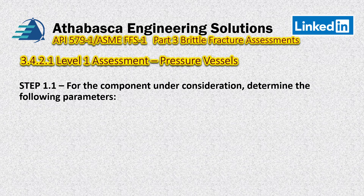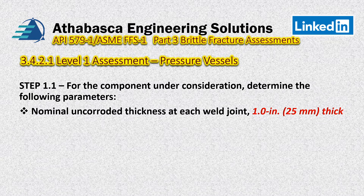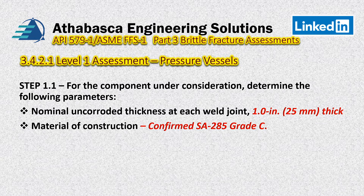As per the procedure, in Step 1 we look up required values. First, we find the nominal uncorroded thickness of the joint. There are considerations around governing thickness depending on the types of joints, but in our case we have a shell, so the governing thickness equals the thickness of the shell — quite simple. We have a one-inch-thick shell, which is less than the one-and-a-half-inch limit, and as a carbon steel it meets the material construction requirements.